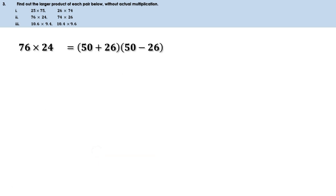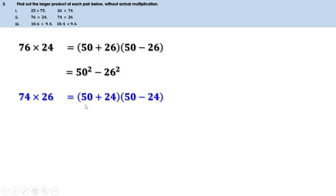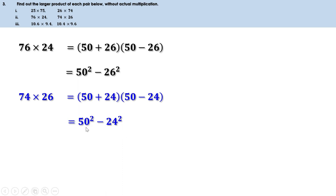Second pair: 76 × 24 vs 74 × 26. 76 × 24 = (50 + 26)(50 - 26) = 50² - 26². And 74 × 26 = (50 + 24)(50 - 24) = 50² - 24². Since 24² is smaller than 26², a smaller quantity is subtracted in 74 × 26. Therefore 74 × 26 is the larger product.